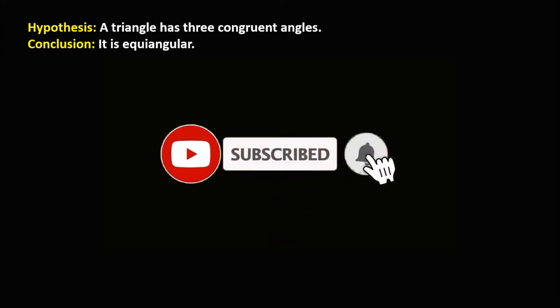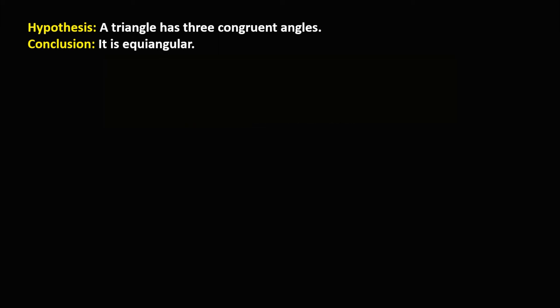Welcome to MathStoria. Given the hypothesis: a triangle has three congruent angles, and the conclusion: it is equiangular. To write a conditional statement, that's P implies Q. From the given, this hypothesis is P and this conclusion is Q.